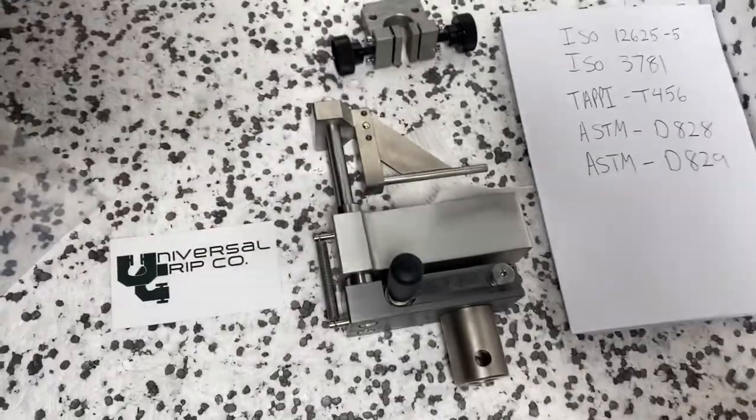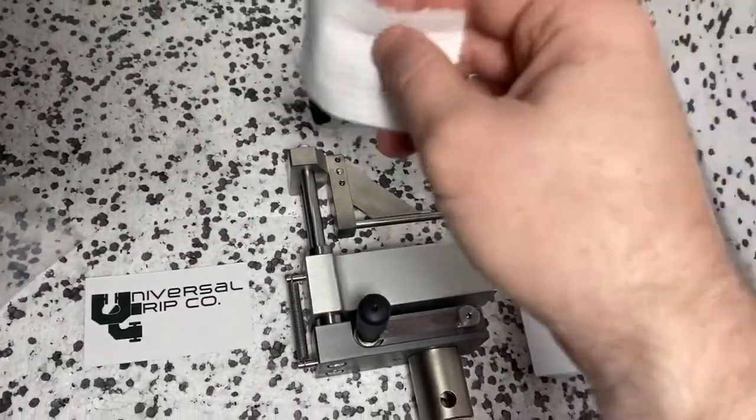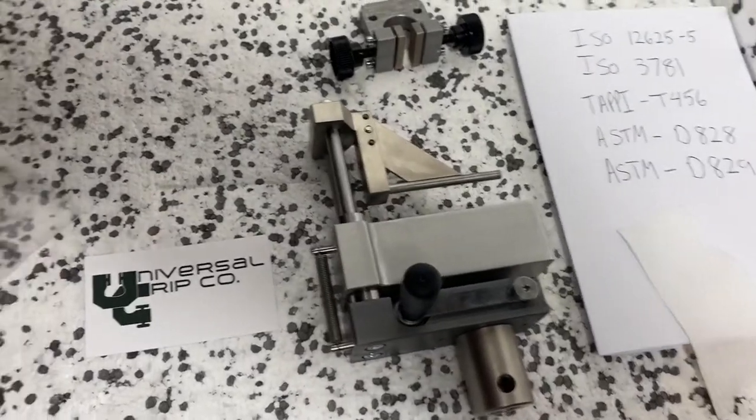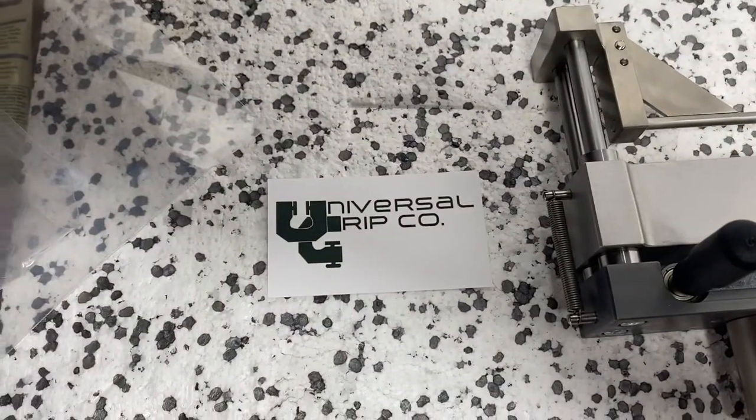This fixture is used for tensile testing wet bath tissue or toilet paper. If you have any questions you can visit us at UniversalGripCo.com. Thanks for watching.